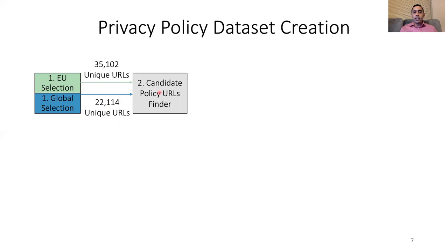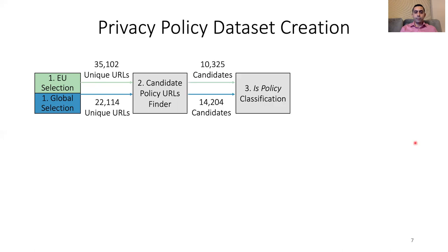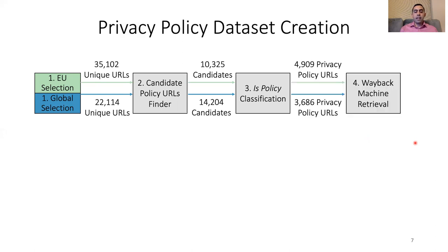Looking at each URL, we extracted candidate privacy policy pages by examining the home page and querying the first-hop links using privacy-related keywords such as 'privacy page' and 'privacy term.' From roughly 10,000 candidate EU pages and 14,000 candidate global pages, we designed a special classifier relying on NLP techniques to classify whether an HTML page is a privacy policy or not. Applying this classifier left us with nearly 5,000 privacy policy URLs for the EU set and around 3,600 for the global set.